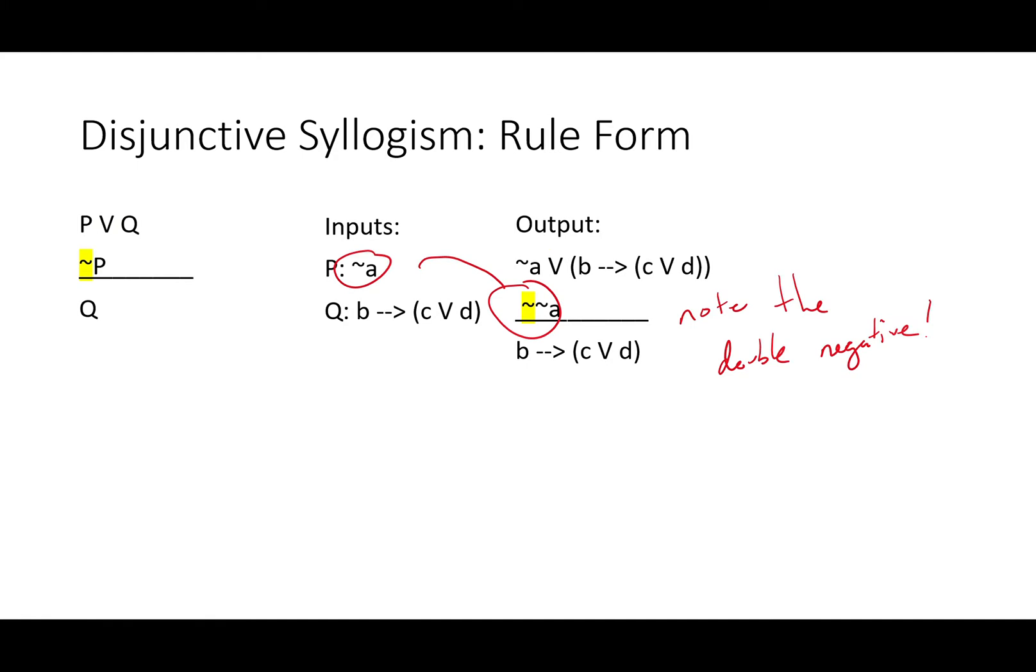Note the double negation here. Not A is subbed in for P. Instead of taking that negation away, we've just added one, so that it matches the rule form exactly. Not A is in for P in the first and second lines, while this sentence is in for Q in both the first premise and it becomes our conclusion, since we found out that not A was negated.